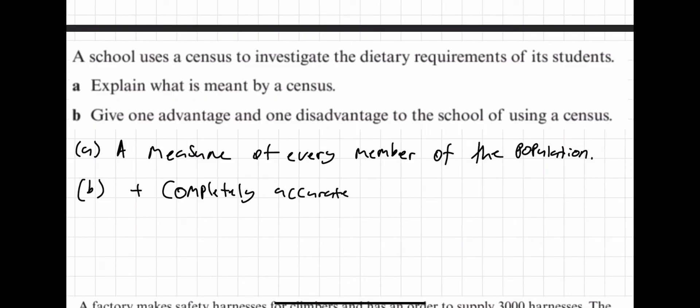Now give one advantage and one disadvantage of schools using a census. Well, completely accurate result is our main advantage, or you could say free of bias, something like that. Try to be more in context in an exam setting. And one disadvantage of a school using a census? Time consuming. If you're going to take a census in a school, that's going to take ages. If you go to a big secondary school, maybe you have 1000, 2000, 3000 pupils. That's just long. Why are we doing that? Take a sample instead.